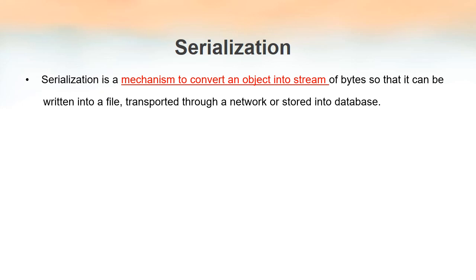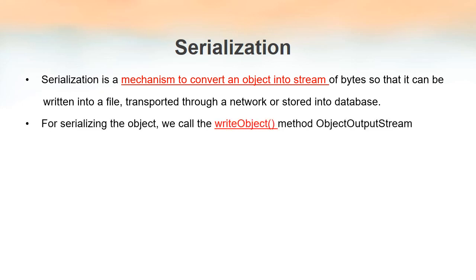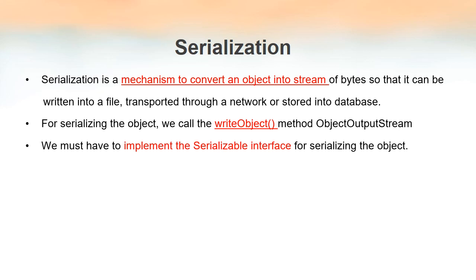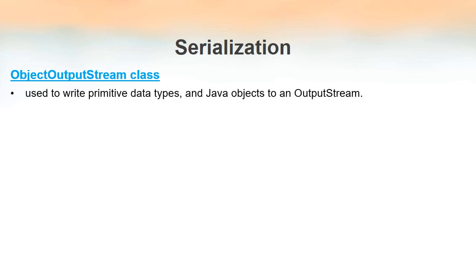How can we perform serialization? For that we have a method named WriteObject which is inside the class ObjectOutputStream. And also we have to use one interface, and the interface name is Serializable. So ObjectOutputStream is a class that is used to write primitive data types as well as Java objects into an output stream.